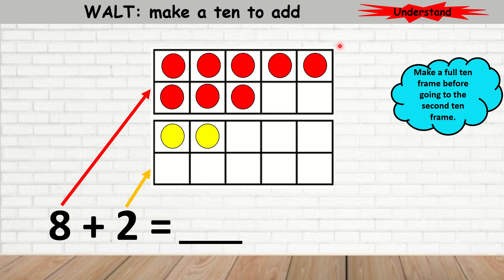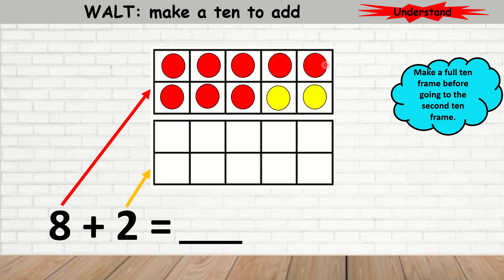But remember, if you're going to make a 10, you need to fill in the first 10-frame before you go to the second 10-frame. So here I've made a mistake. I need to make sure they move into the first 10-frame so that I can create a 10. So here I have a 10, and in the second 10-frame I have 0. So 8 plus 2 is 10.